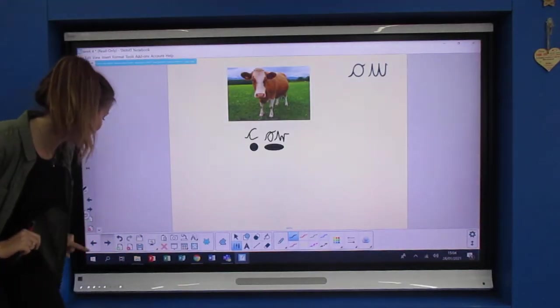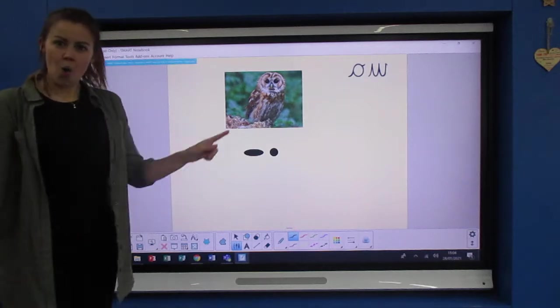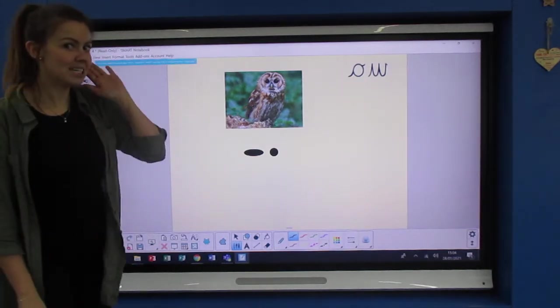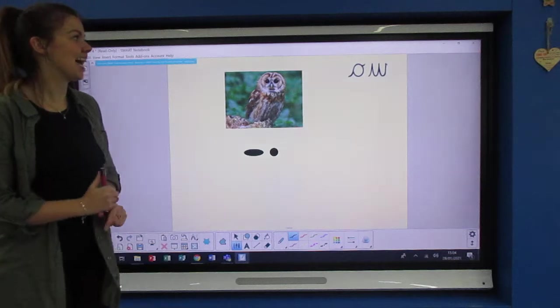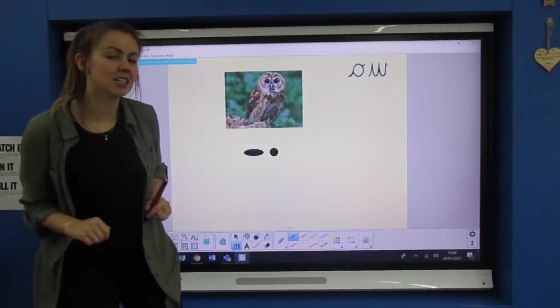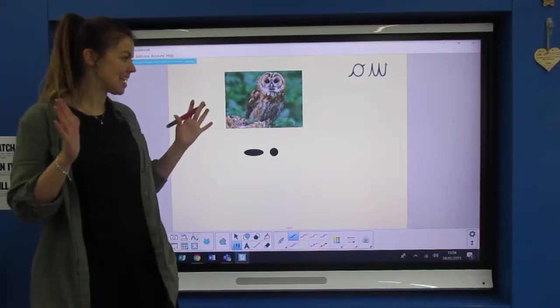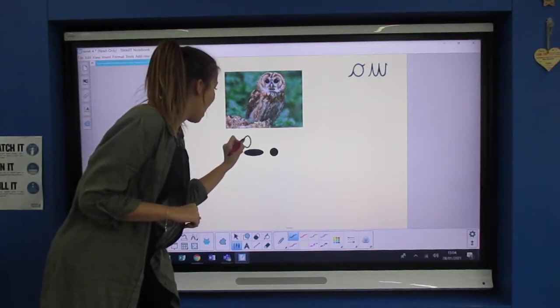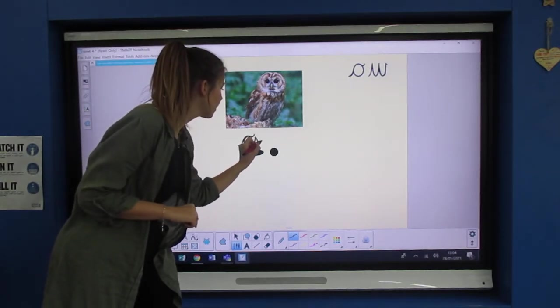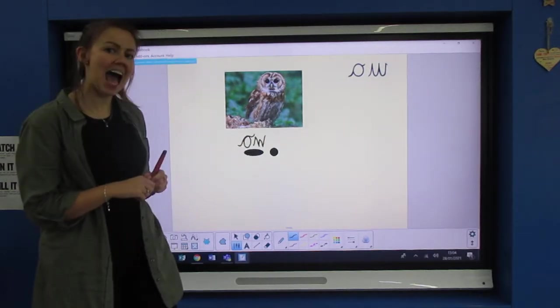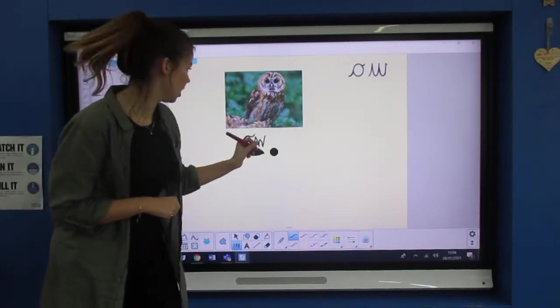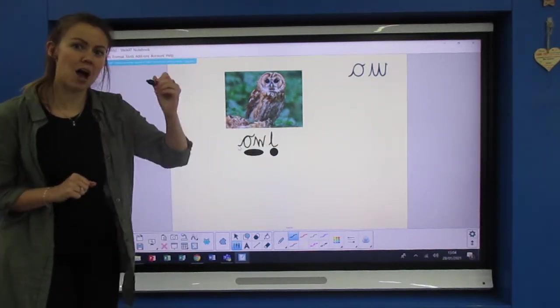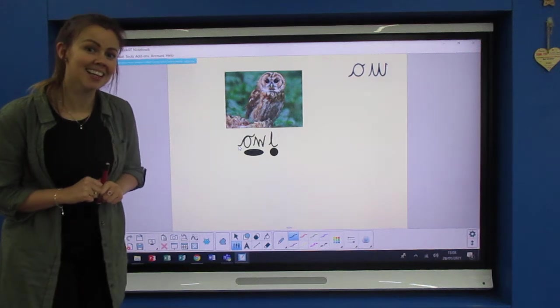Let's look at our next word. What's this a picture of? Are you shouting it at me? It's an owl. So your owl is at the beginning of the word. So we've got ow, what will be next? Ow, ow, owl. Write that owl on your board for me.